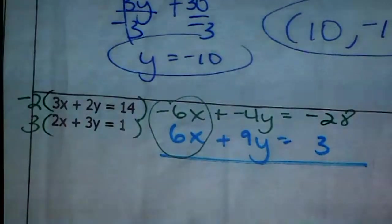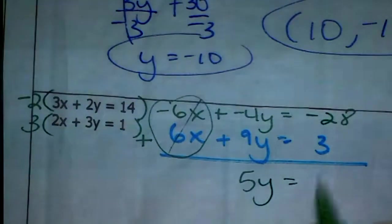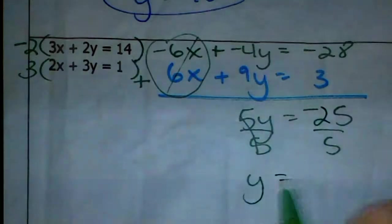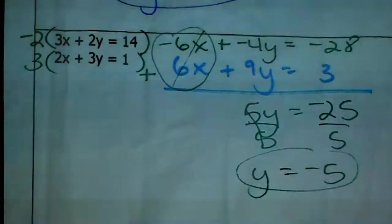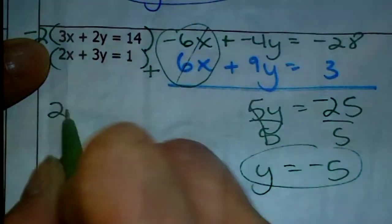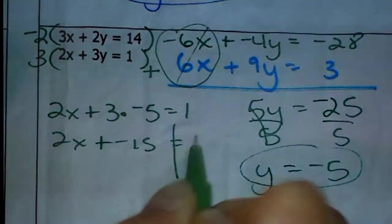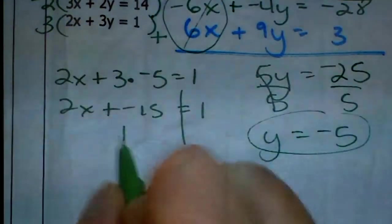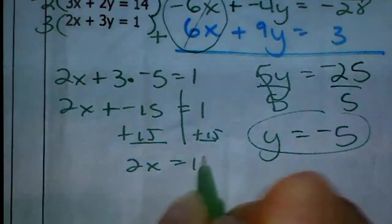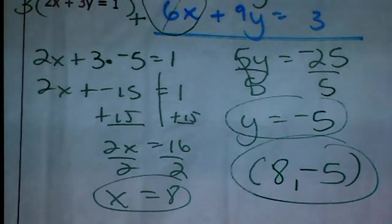Negative 2 times 3X is negative 6X, negative 2 times 2Y is negative 4Y, and negative 2 times 14 is negative 28. The second equation: 3 times 2X is positive 6X, 3 times 3Y is positive 9Y, and 3 times 1 is 3. Negative 6X plus 6X cancels out. Negative 4Y plus 9Y is 5Y, and negative 28 plus 3 is negative 25. Divide each side by 5 and Y equals negative 5.